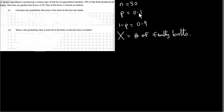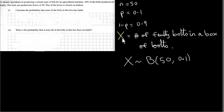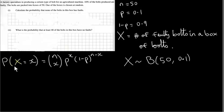If the probability that a bolt is faulty is 0.1, then the probability that a bolt is not faulty is 1 minus P, which is 1 minus 0.1, which is 0.9. So either a bolt is faulty or it's not faulty. I'm letting the random variable X be the number of faulty bolts in a box. The random variable X follows a binomial distribution with parameters N = 50 and P = 0.1. The probability that X takes on some value little x is given by NCX times P to the power of x times 1 minus P to the power of N minus x, where little x runs from 0 all the way up to N.